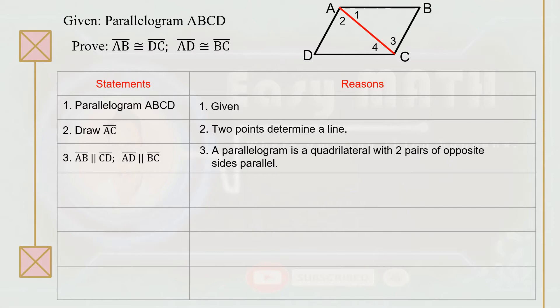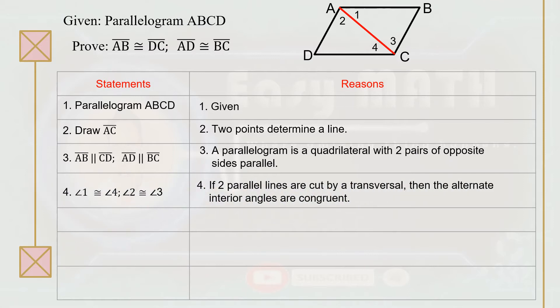The reason is that a parallelogram is a quadrilateral with two pairs of opposite sides which are parallel. Since the opposite sides of a parallelogram are parallel, and we join two non-consecutive vertices forming segment AC, we can say that angle 1 is congruent to angle 4, and angle 2 is congruent to angle 3, because if two parallel lines are cut by a transversal, then the alternate interior angles are congruent.